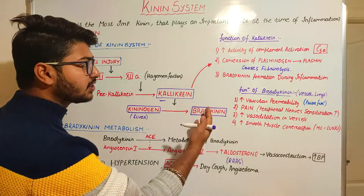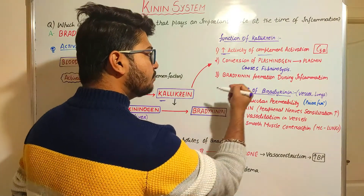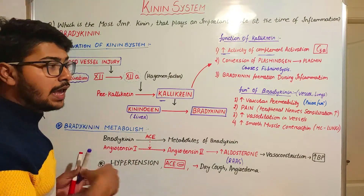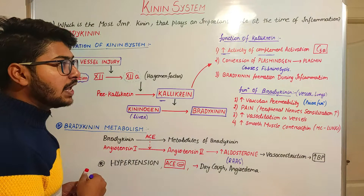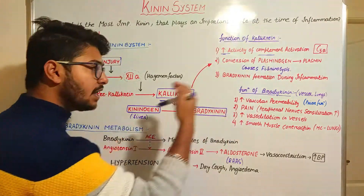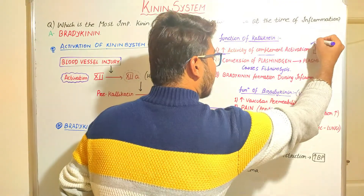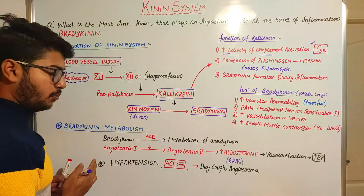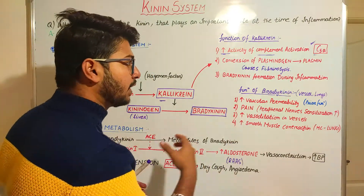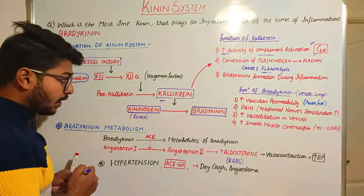Kallikrein has special functions — it will increase the activity of complement activation. As we know, complement activation can help in phagocytosis by opsonization and can initiate the process of inflammation. So kallikrein also acts as a mediator that increases the activity of the complement system, and the complement mostly activated is the C5A protein. Next, it will be converting free plasminogen to plasmin, and as we know, plasmin is important for causing fibrinolysis activity.